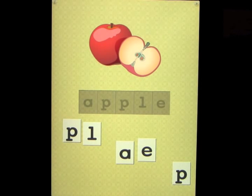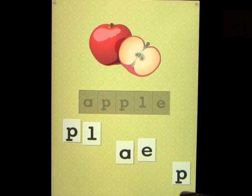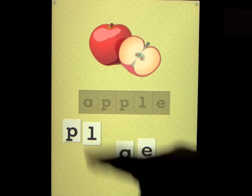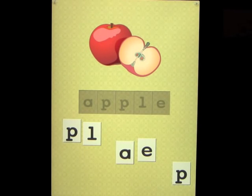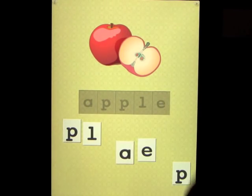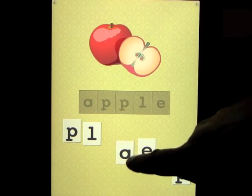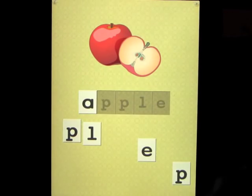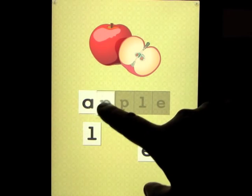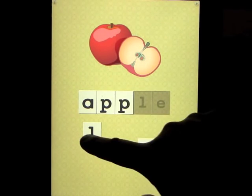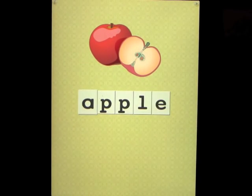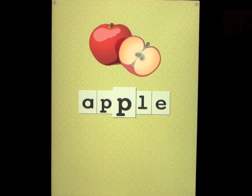We're going to try to spell the word. The letters are mixed up, but if you don't know what a letter is you can press it in the box — it'll shake and tell you what it is. Then drag it in. So: A, P, P, L, E — apple!